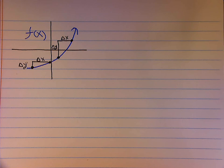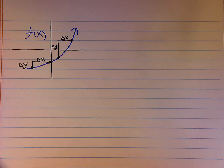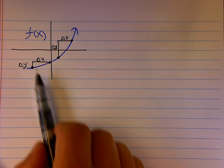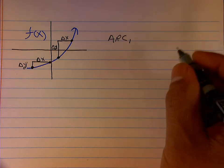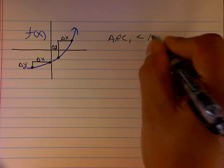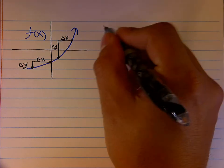We're going to now examine a different situation. In this picture of this function, we see two sets of points being represented and their average rate of change being represented graphically. As we move from left to right on this graph, the average rate of change of the first pair of points is smaller than the average rate of change of the second pair of points. Whenever the average rate of change of any pair of points is getting larger as you move from left to right, we call that situation concave up.